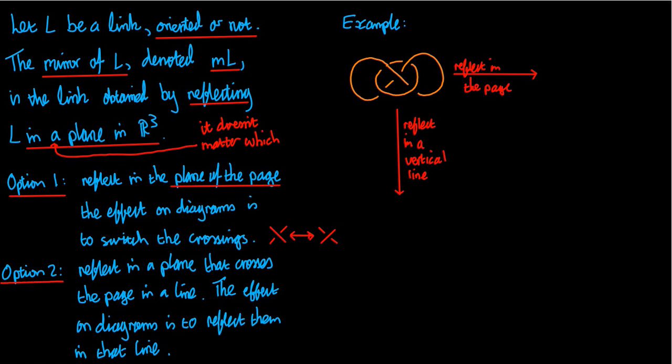But there's a second option. Option number two, you could reflect in a plane that crosses the page in a line. So if you pick a line in your page, then you can think about the plane that consists of that line coming out towards you and going away from you. So it gives you a plane that crosses the page in a line.